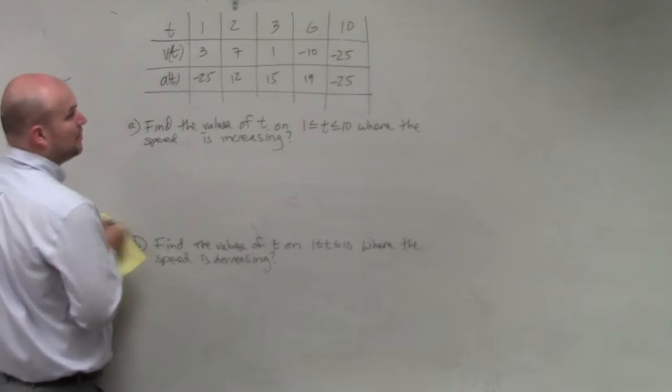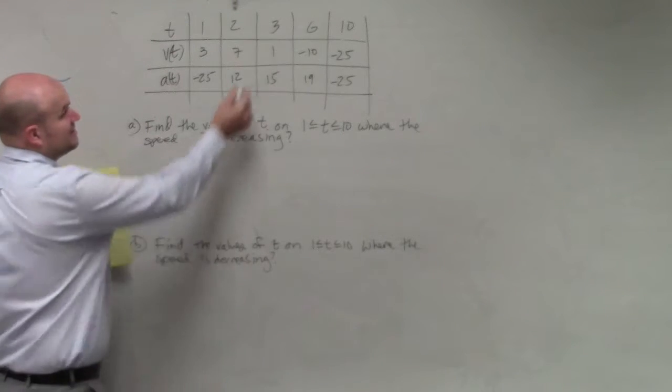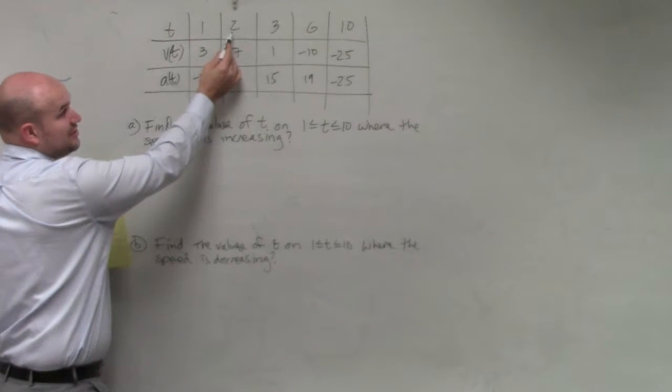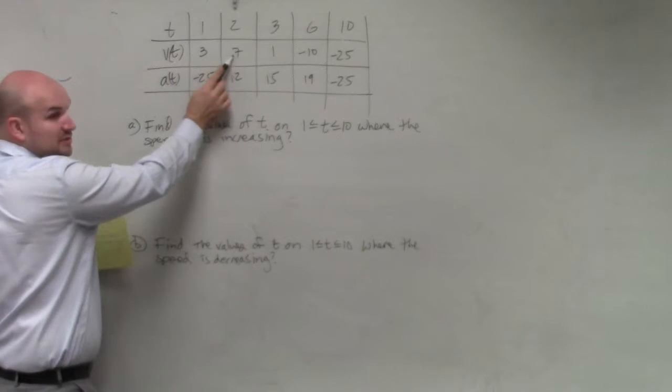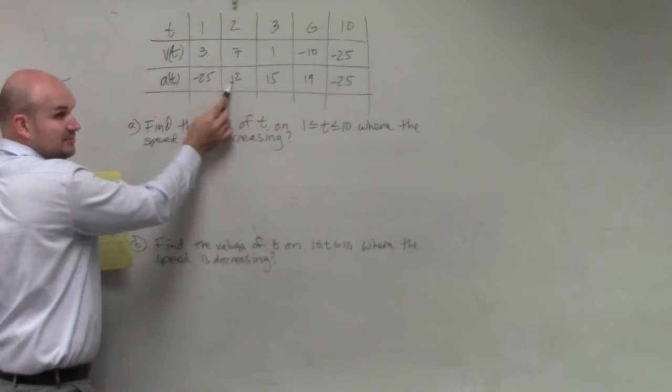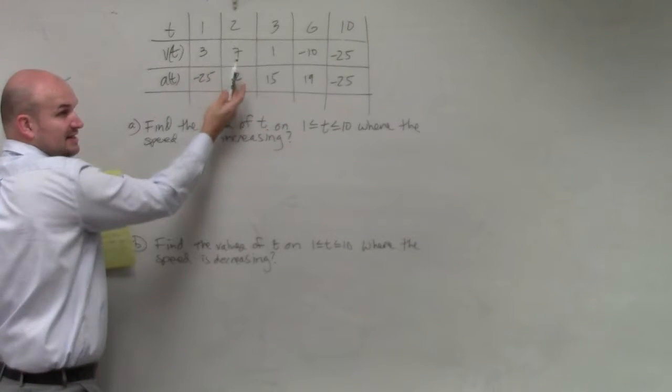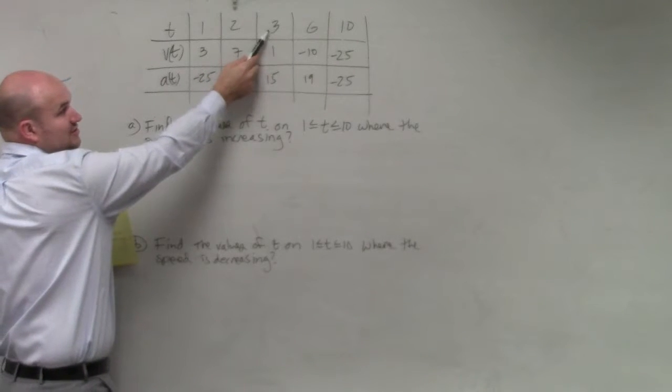We can see there's a couple points that are of importance looking at increasing. At time equals 2, we have a velocity of 7, which is positive, and acceleration, which is positive. Therefore, we can say that it is increasing.